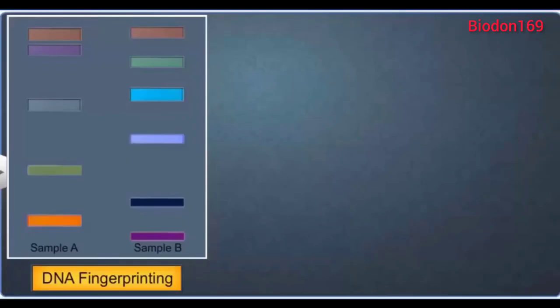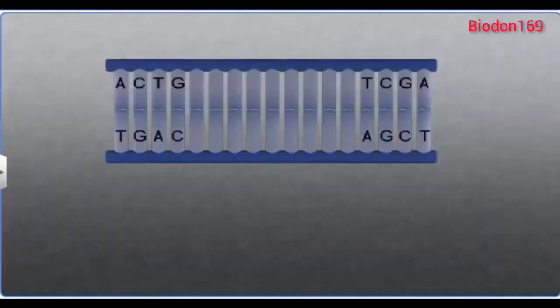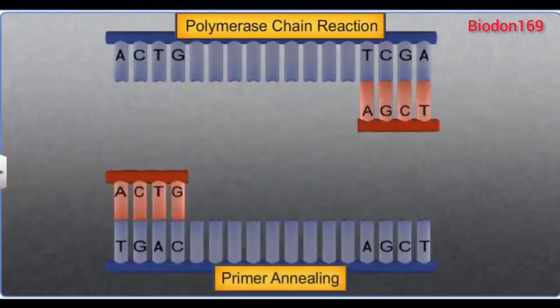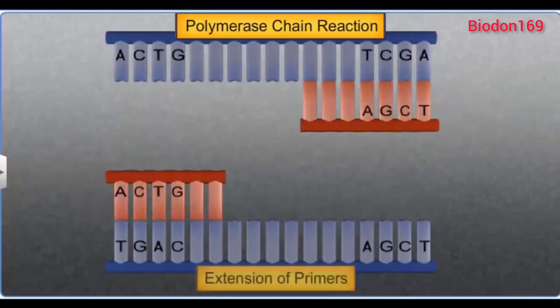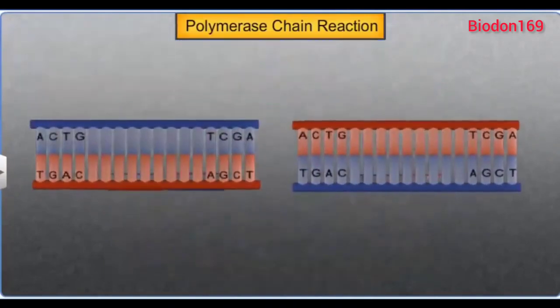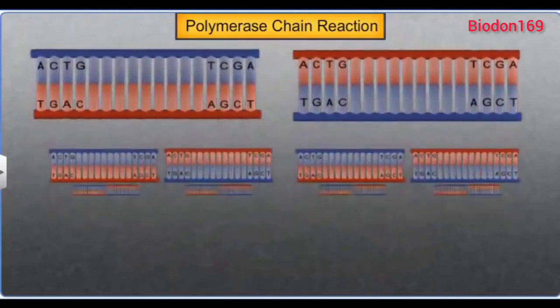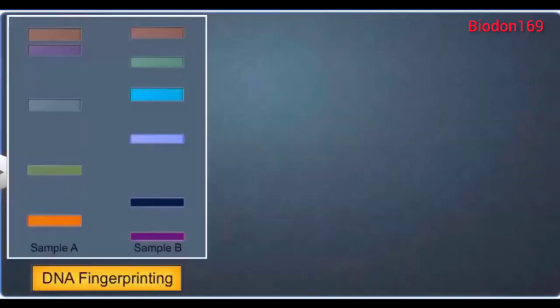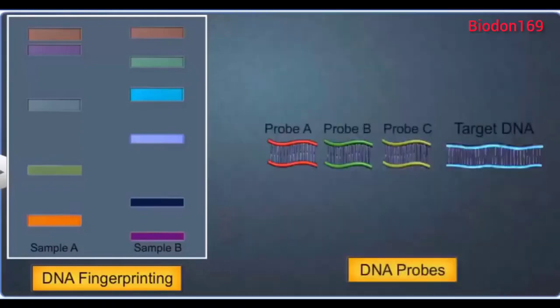Today, the accuracy of the DNA fingerprinting technique has further improved due to the advent of the polymerase chain reaction, or PCR, where multiple copies of a single DNA sequence can be made. DNA fingerprinting has also advanced due to the use of different types of DNA probes.